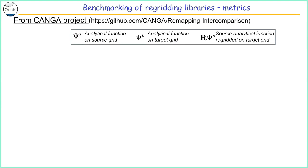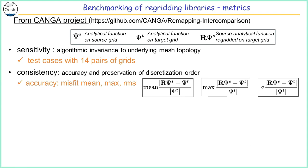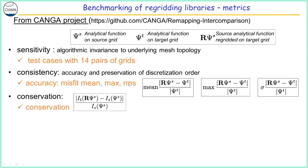To qualify the results, we used the metrics defined by the Kanga project in the US. These metrics analyze the sensitivity — that is, invariance regarding the mesh topology. We cover that because we have different test cases with different pairs of grids. The consistency metric evaluates accuracy and preservation of the discretization order. We calculate the mean misfit, maximum misfit, and RMS of the misfit.